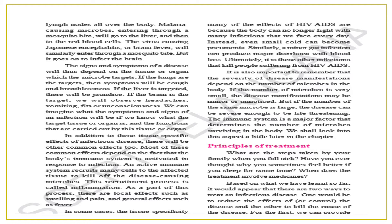But Japanese encephalitis goes on to infect the brain. The signs and symptoms of a disease will thus depend on the tissue or organ which the microbe targets. If the lungs are the target, symptoms will be cough and breathlessness. If the liver is targeted, it causes jaundice. If the brain is the target, one will experience headache, vomiting, and unconsciousness. We can imagine what the symptoms of an infection will be if we know the tissue or organ target and the functions carried out by that tissue or organ.